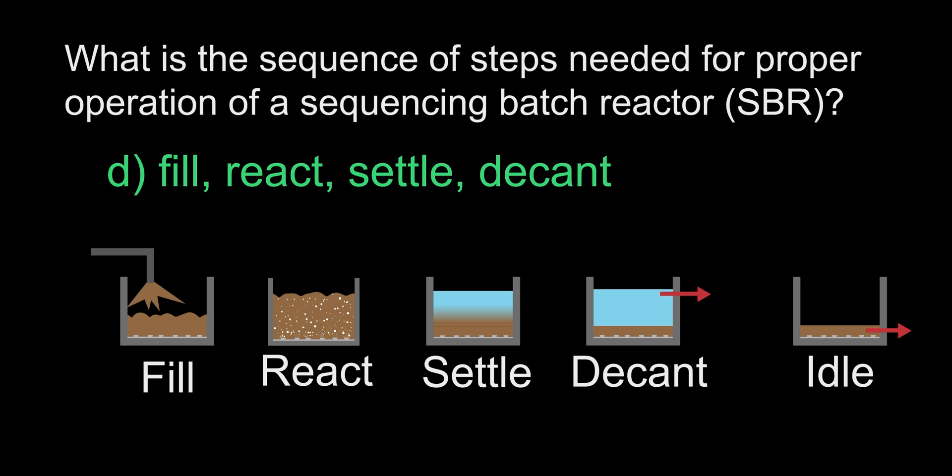The answer is D, fill, react, settle, decant. Sequencing batch reactors are really neat. They are a single tank that performs multiple functions. This keeps their footprint quite small. Plants that use this system have at least two of these, and they are usually found at smaller plants handling less than one MGD. I would advise you to learn more about SBRs and how to troubleshoot them, as those kinds of questions may appear on your exam as well.